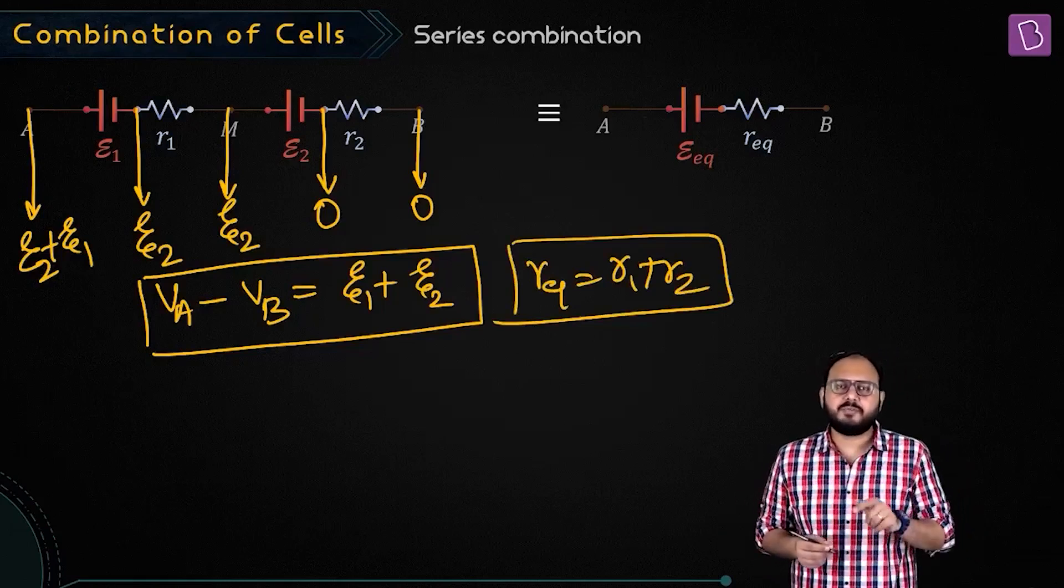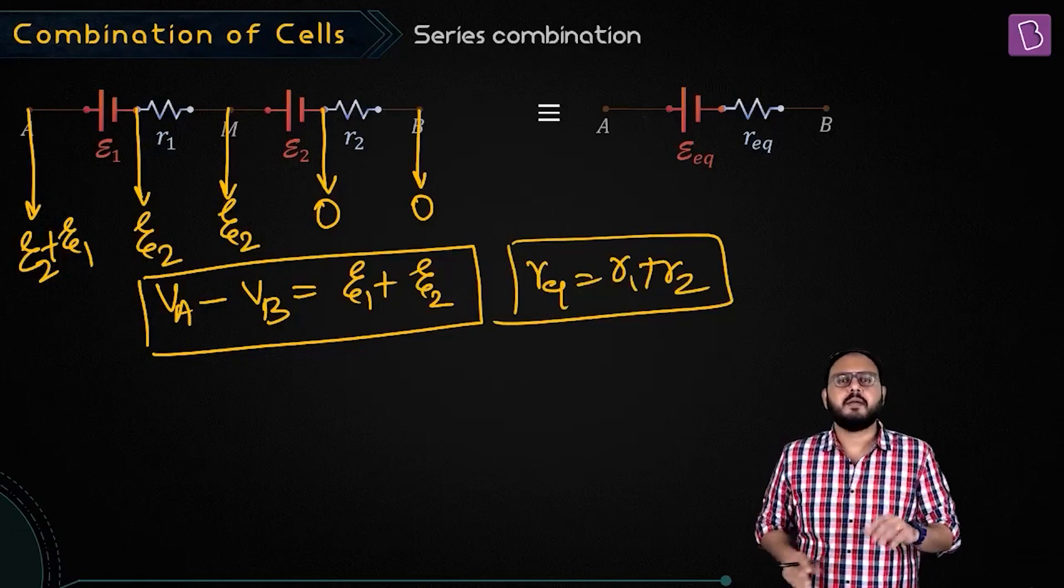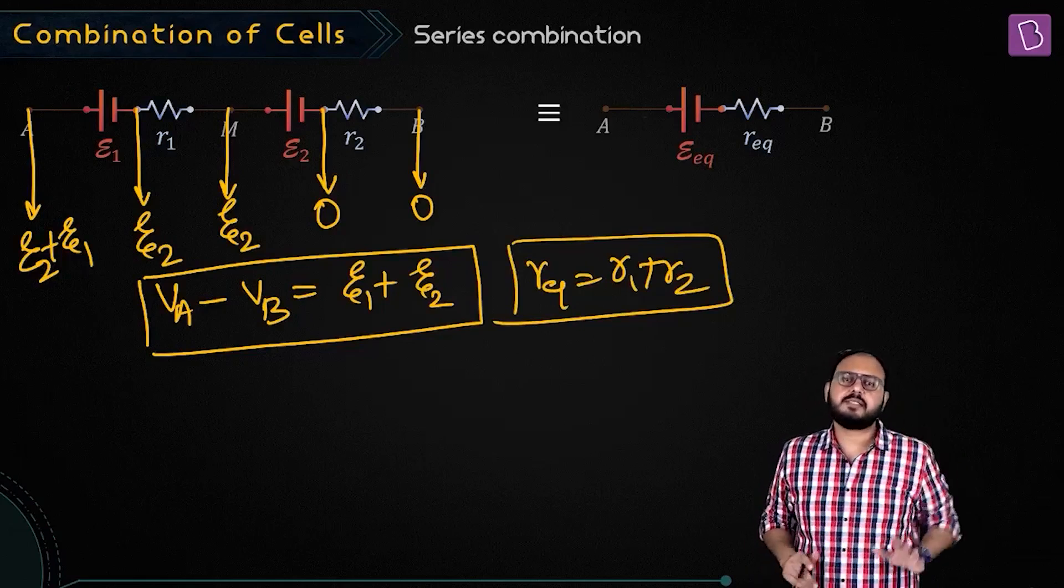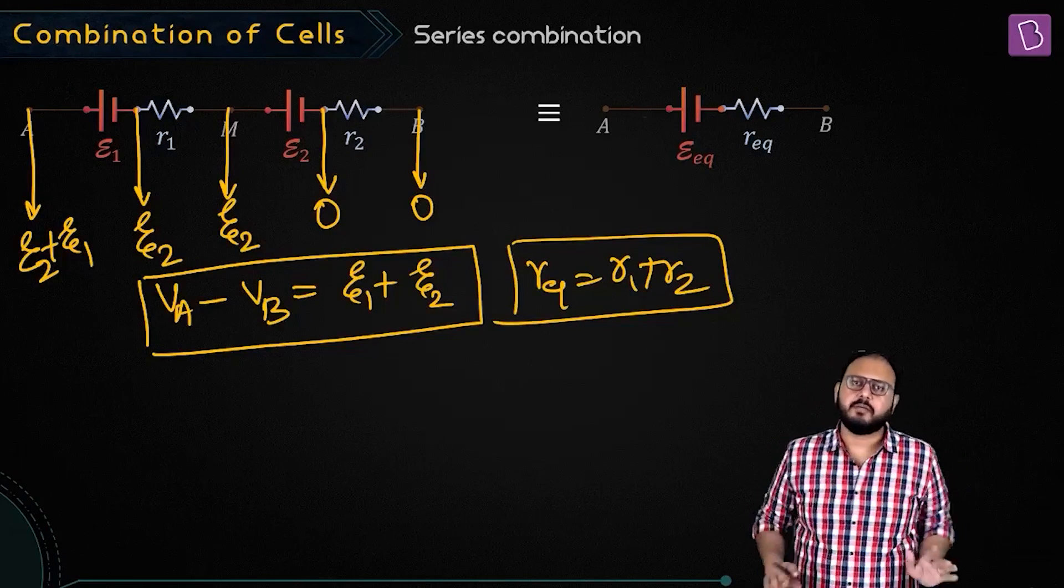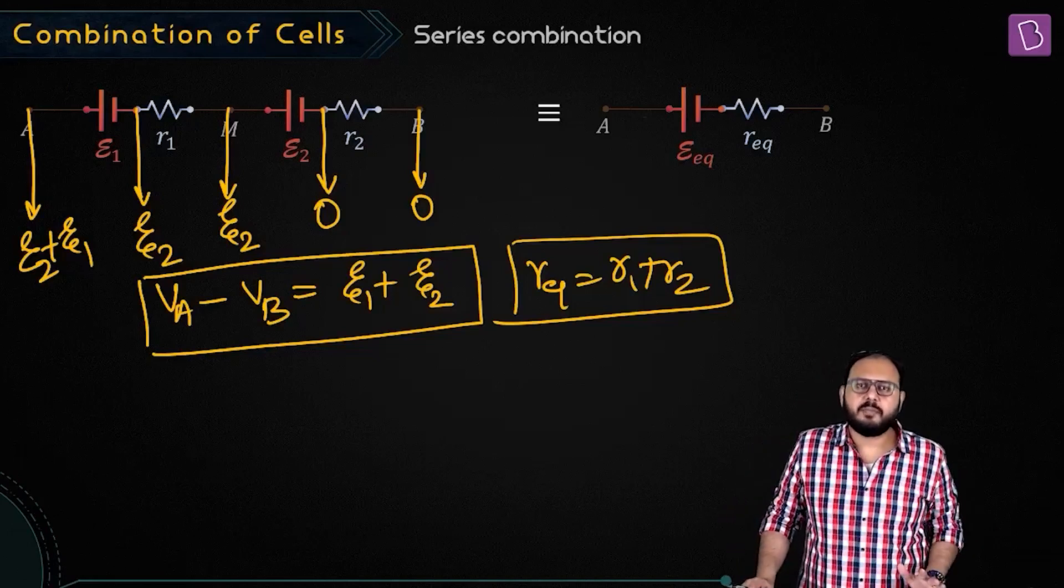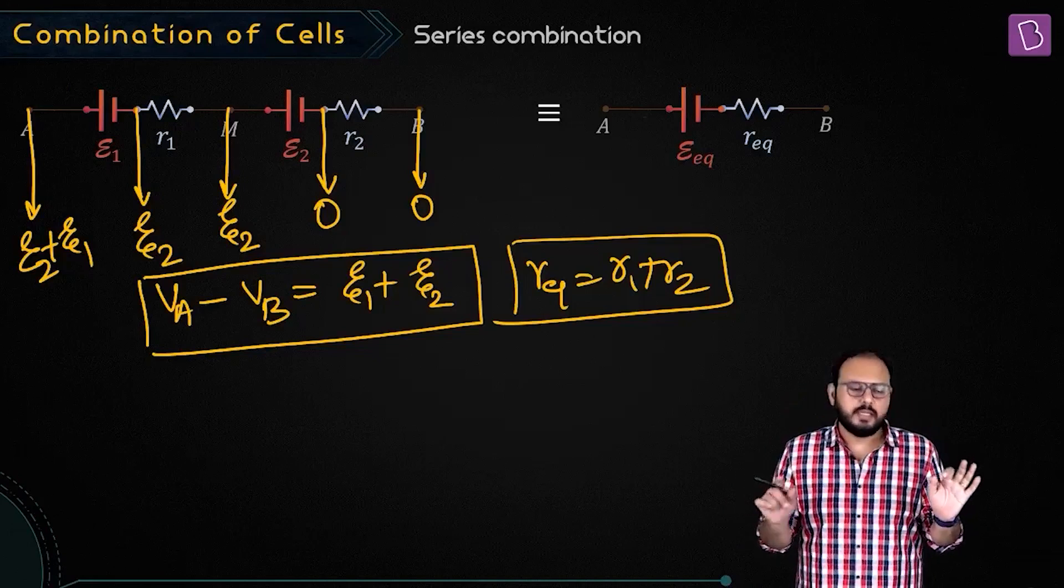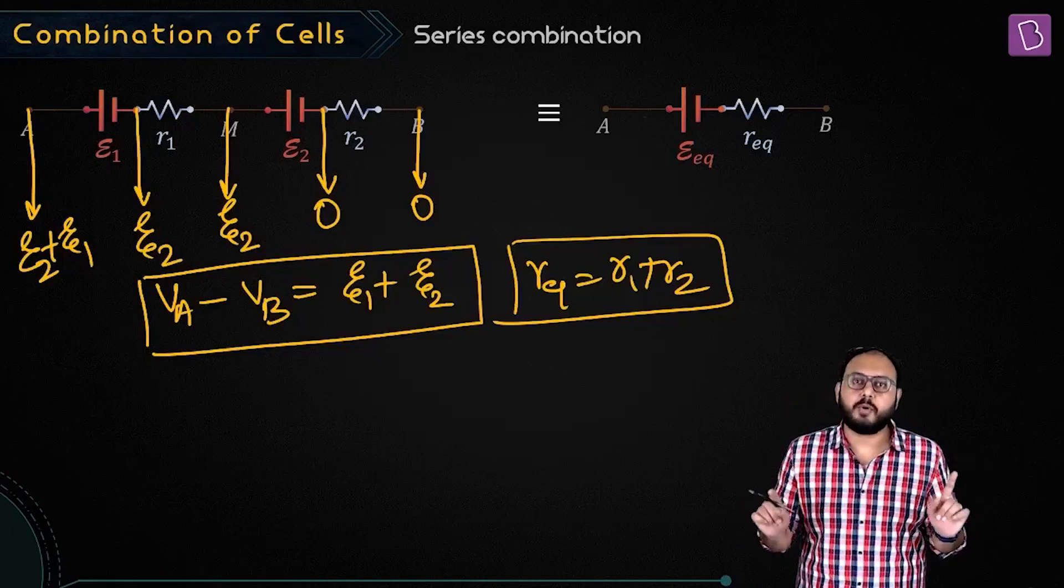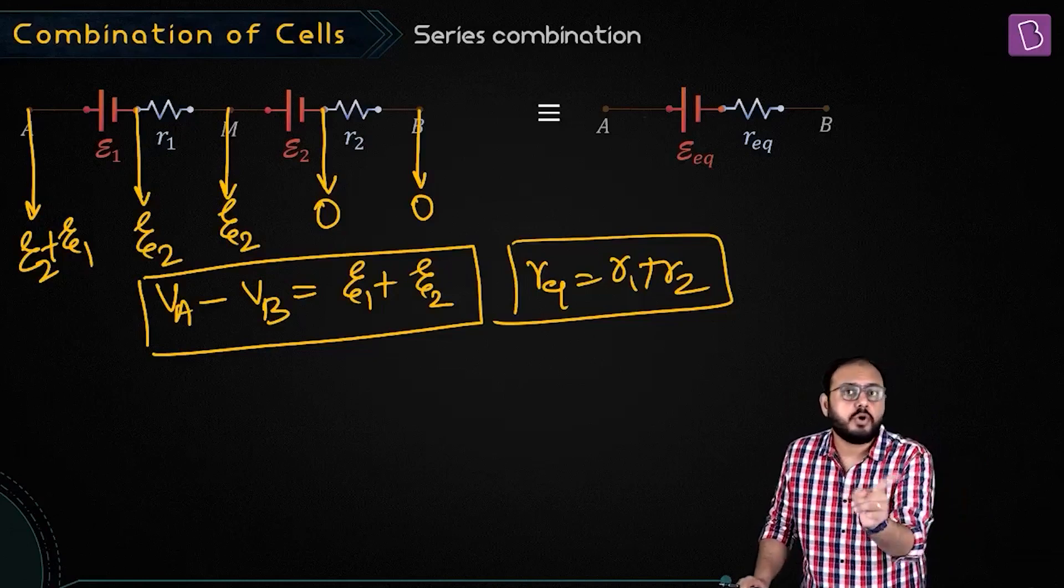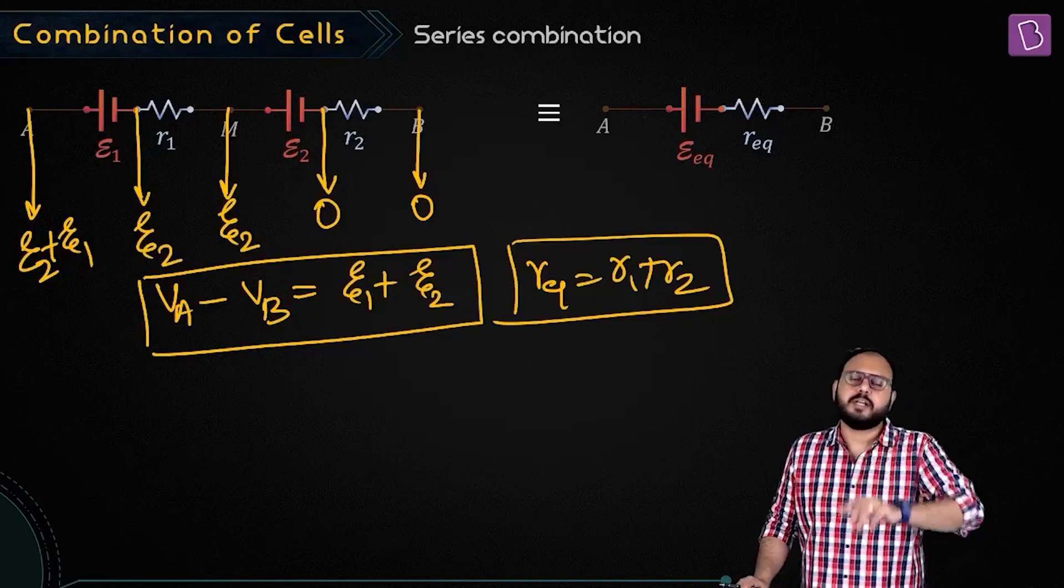What I am about to say is not valid only for series combination, it is valid for anything. Let me give you a general statement: any amount of cells in combination in any way, not just series. Whatever are the last two end points, the potential difference between those two end points when the combination is not being used is called equivalent EMF.